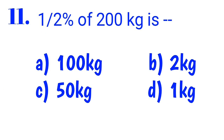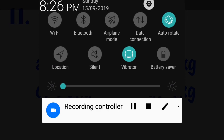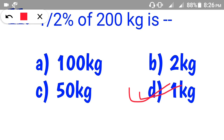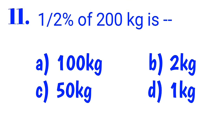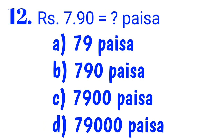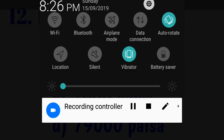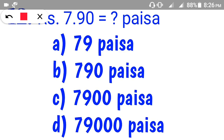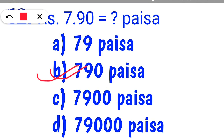1.2% of 100 kg, 1.5% of 200 kg, 2.5% of 100 kg, 1.5% of 200 kg. Number 12: Rs. 790 is equal to worth of Rs. The correct answer is B — Rs. 795.